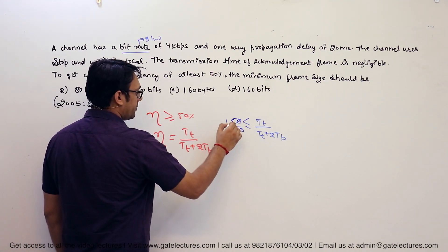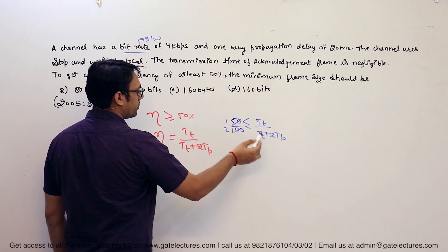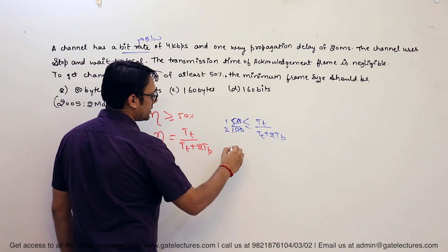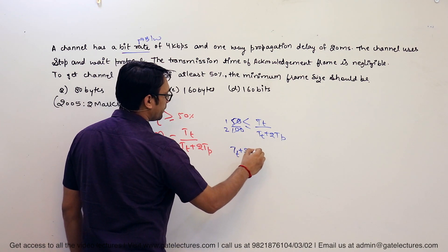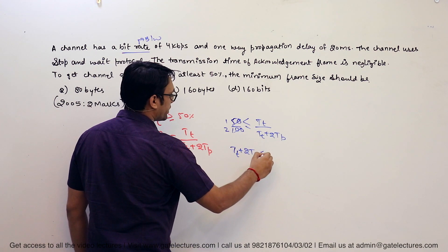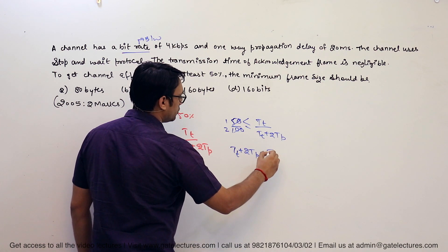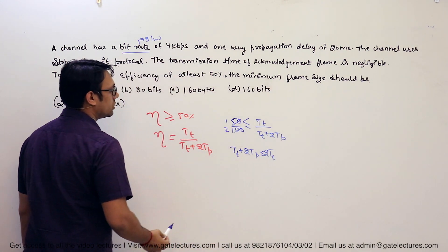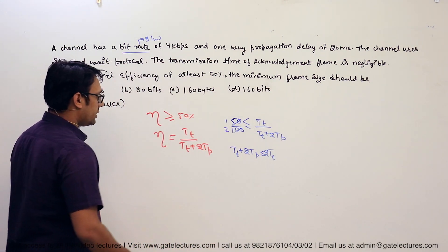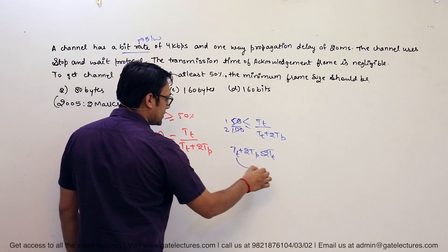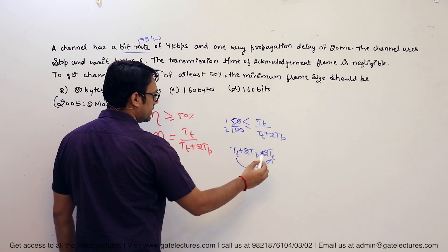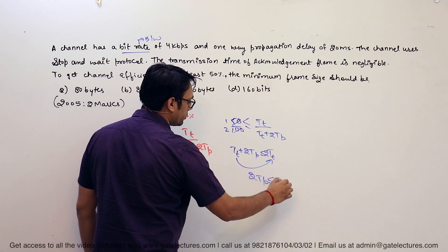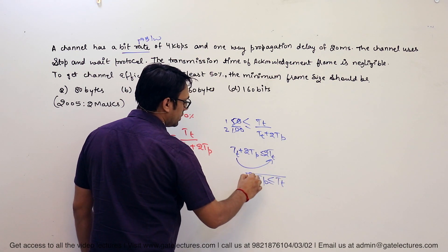This simplifies to 1/2. After cross multiplication, we get: TT + 2·TP should be less than or equal to 2·TT (2 times the transmission time). Taking the TT terms to one side, this becomes: 2·TP should be less than or equal to TT (the transmission time).